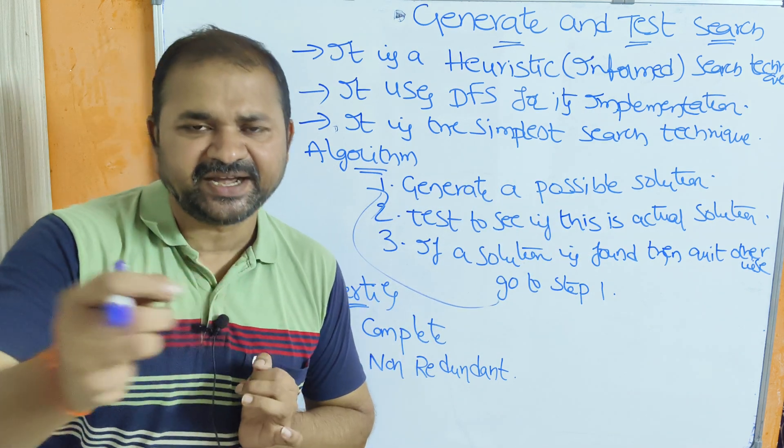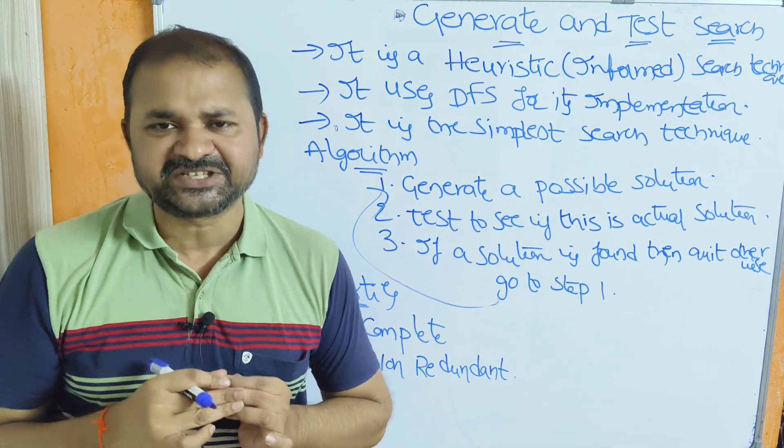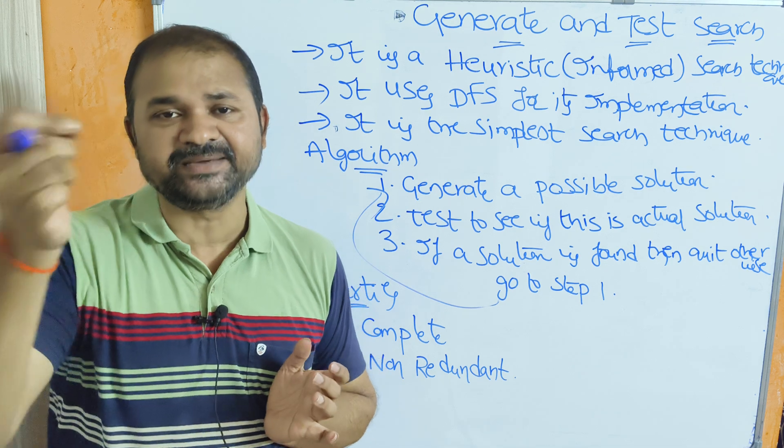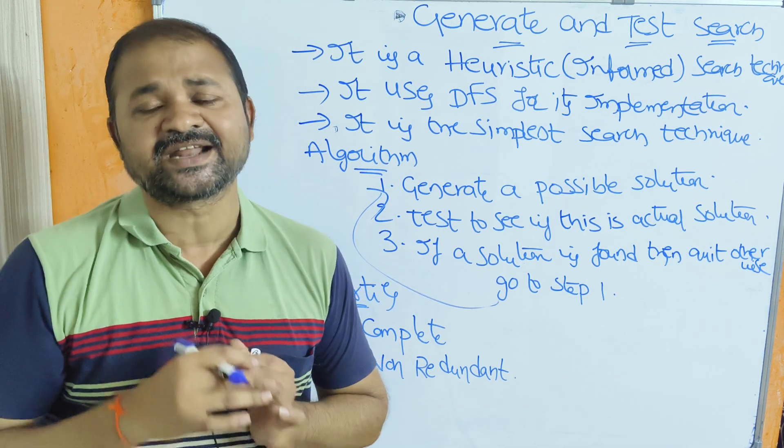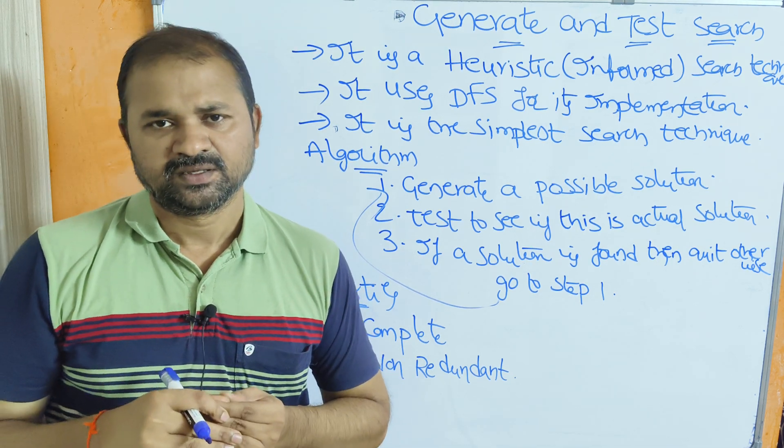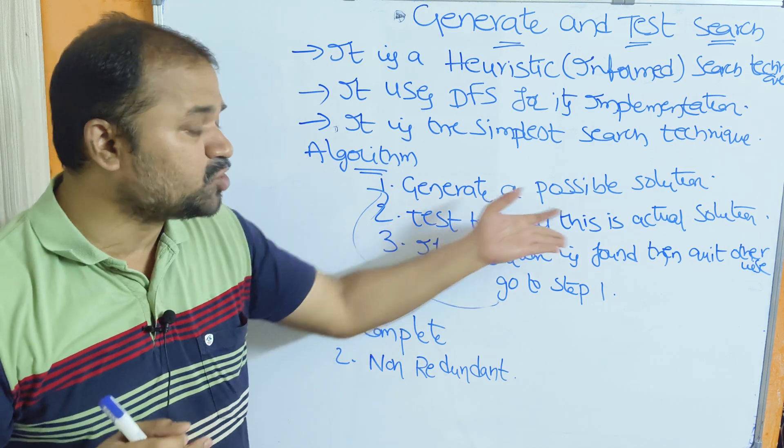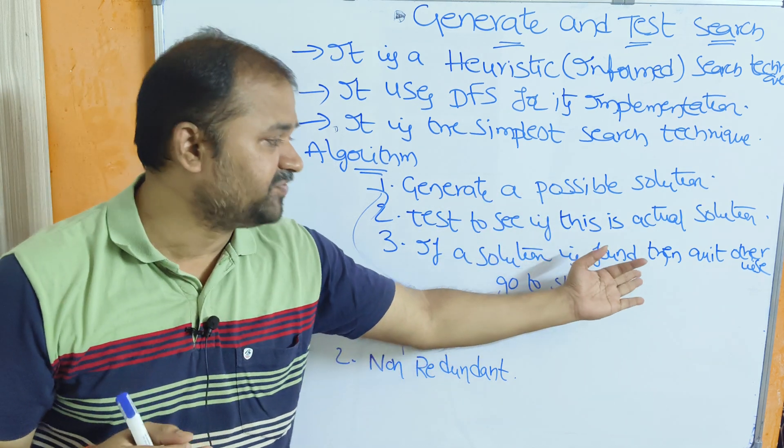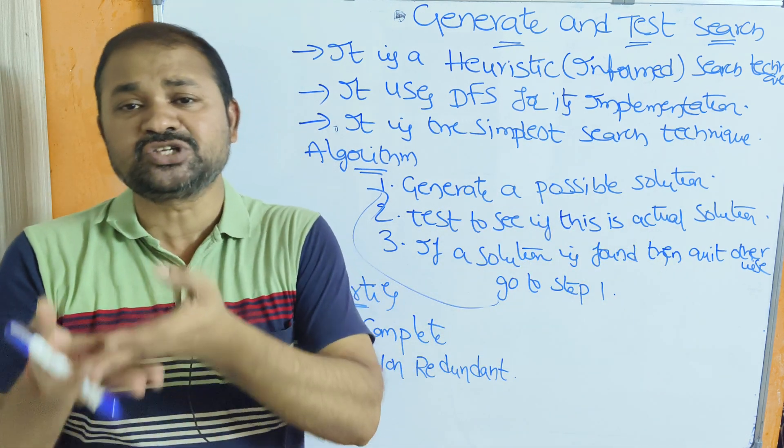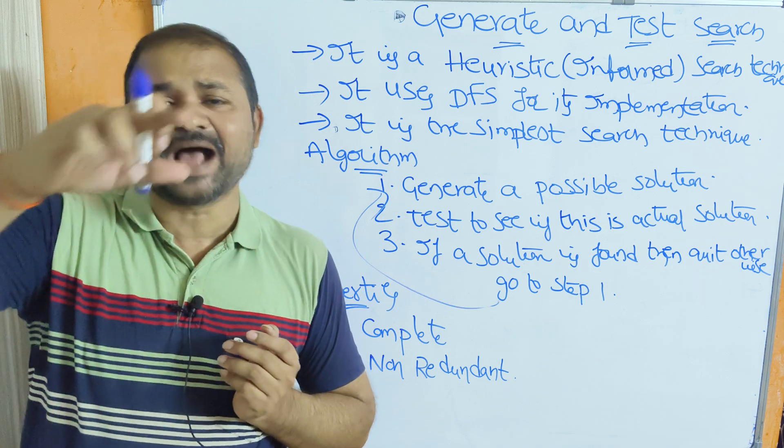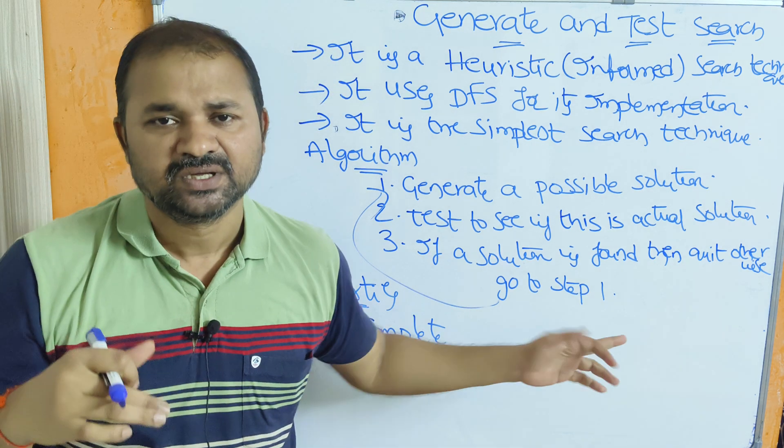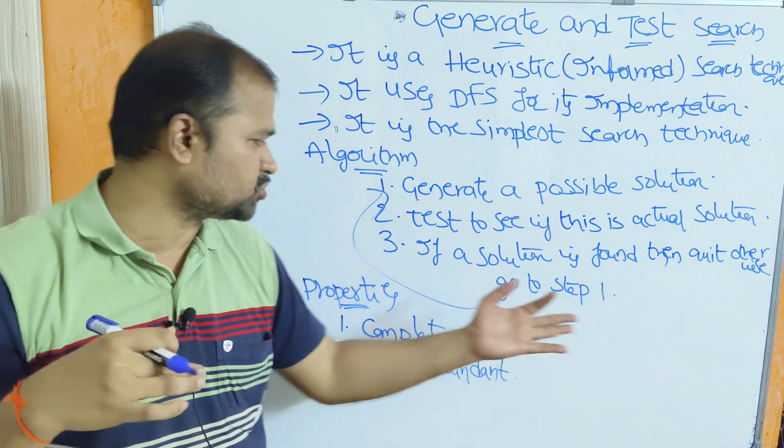First step, generate a solution. Second step, test to see if that solution is correct or not. Next, if the solution is found, then quit. Suppose if the solution is not found, then we have to generate one more solution. So in order to generate one more solution, go to step 1.